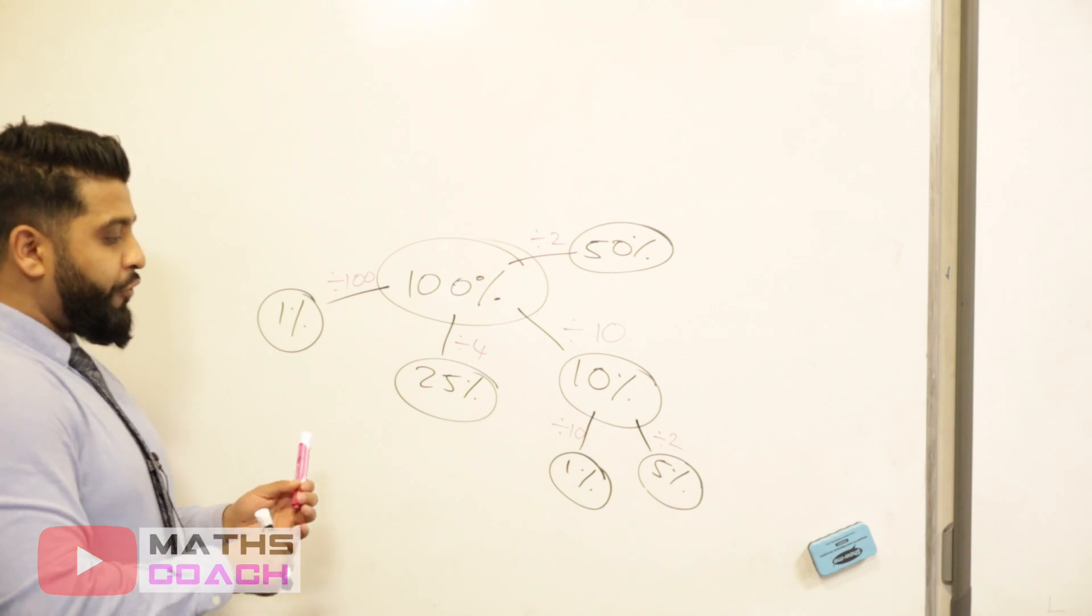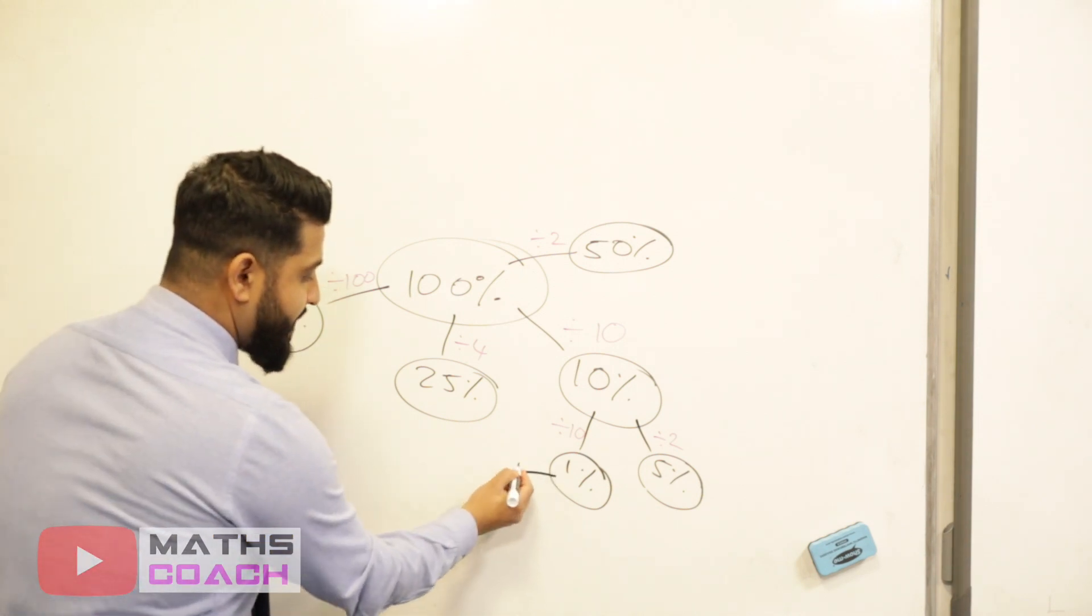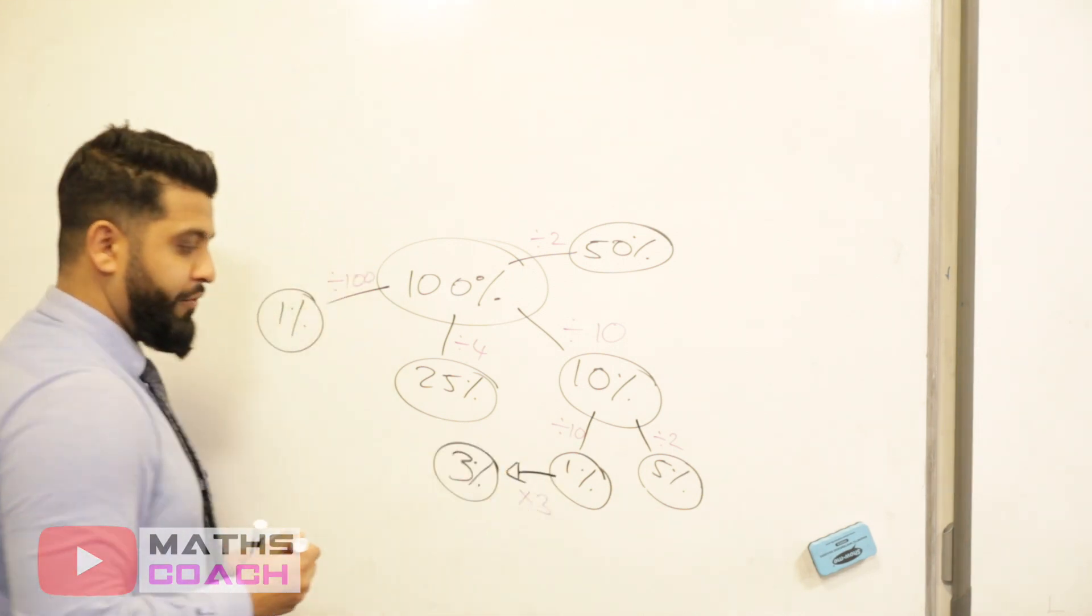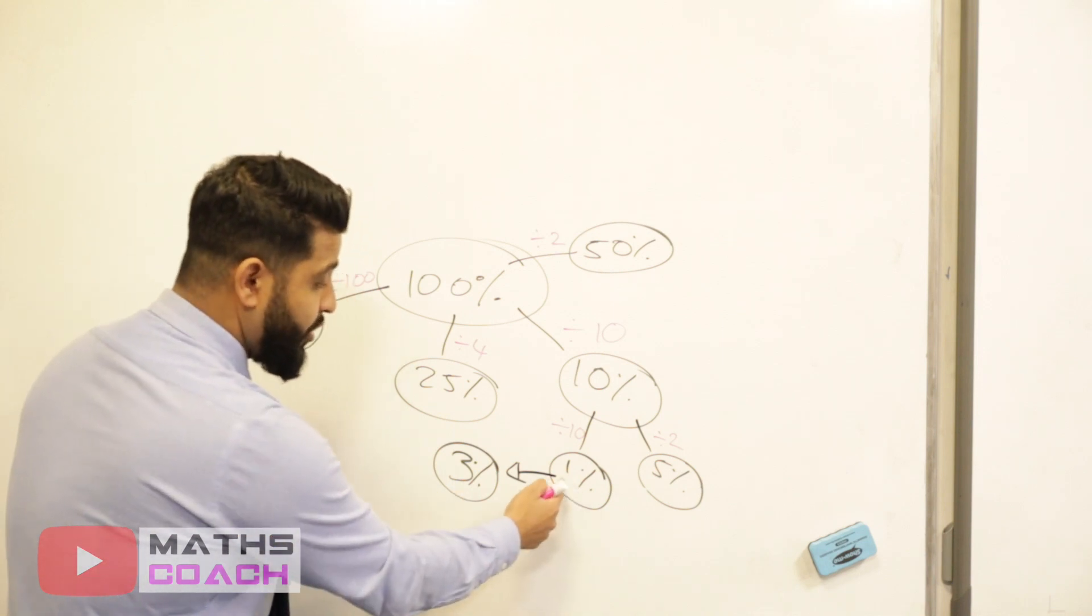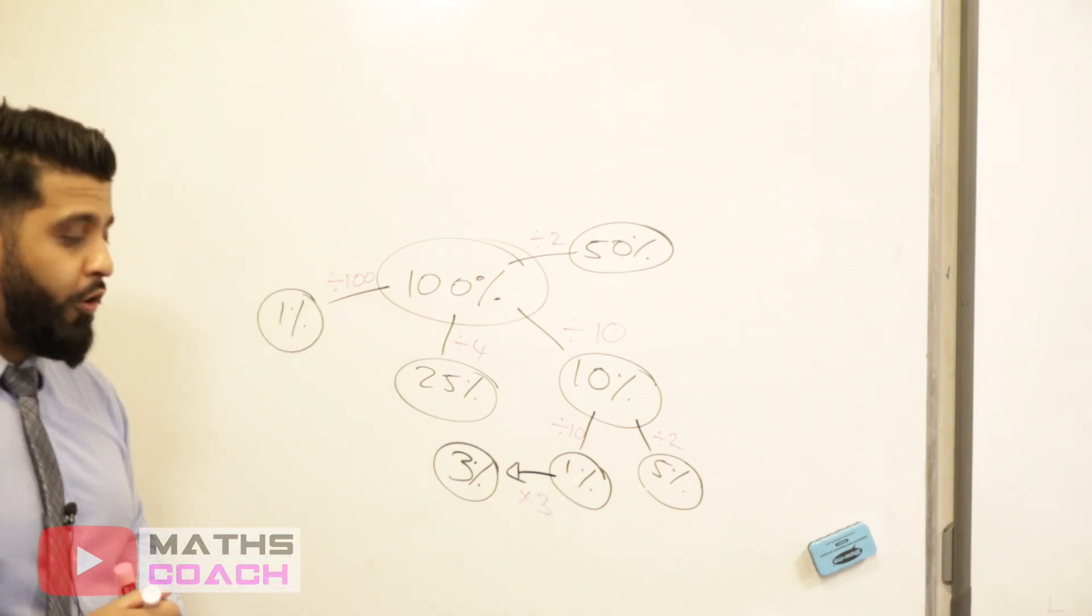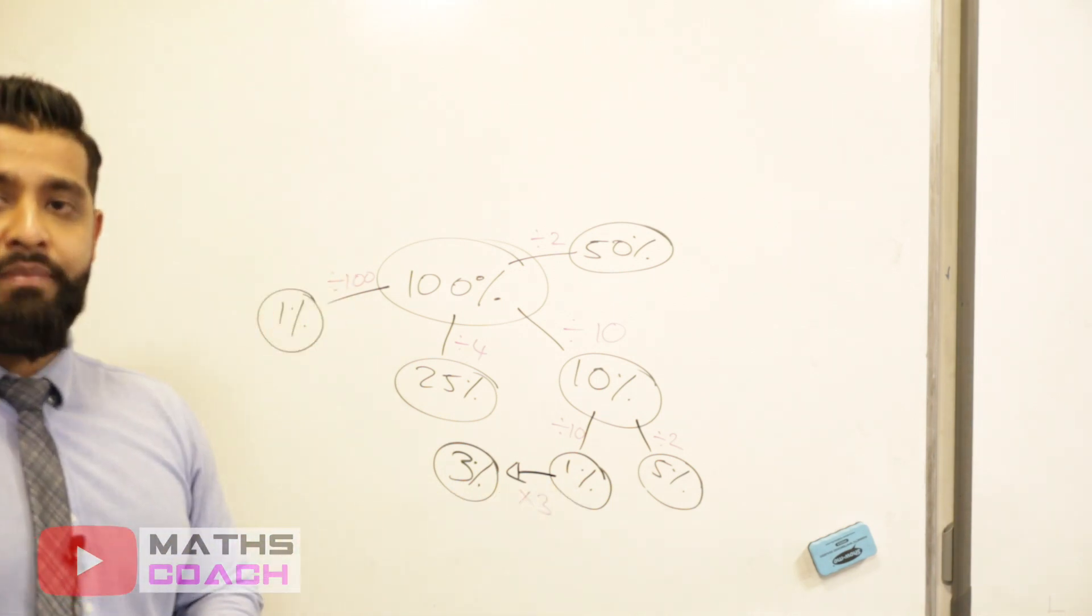We can also find 5% from 10%. How? There are two lots of 5% in 10%. So we'll get our 10% and divide it by two to find 5%. If you want to find 3%, you can use the 1% amount times it by three. If you want to find 4%, you can time the 1% by four. This is how we can find percentages.